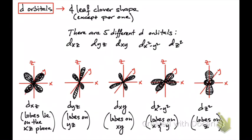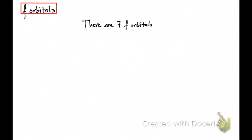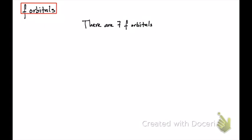On the test, I may ask you what a DXY looks like or what a DZ² looks like. The last type of orbitals are called the F orbitals. You don't need to know what the shape looks like for the F orbitals. You just need to know that there are seven different F orbitals, each orbital holds a maximum of two electrons, and so the F sublevel can hold a maximum of 14 electrons.